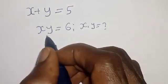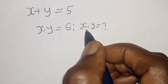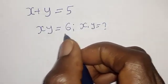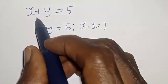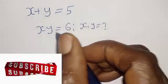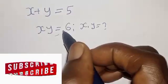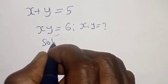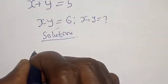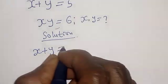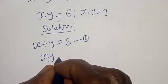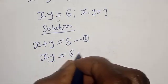s plus y is equal to 5, s times y is equal to 6. What is the value of s and y? Hi everyone, welcome to my class. In this class I want to find the value of s and y from these given equations: s plus y is equal to 5, and s times y is equal to 6. This is equation 1 and equation 2.